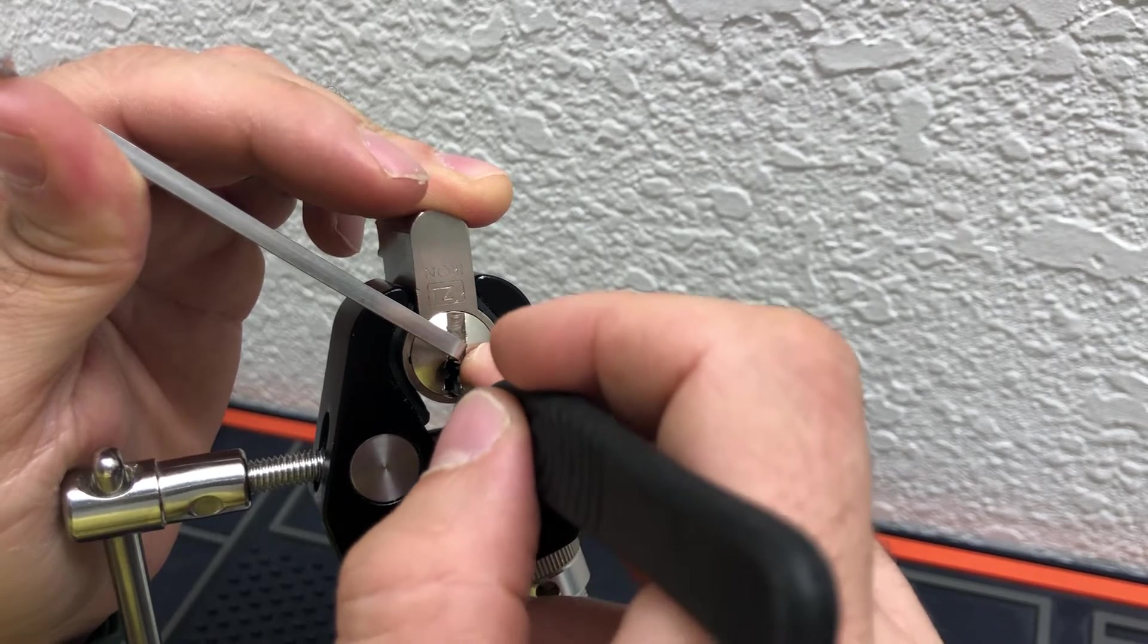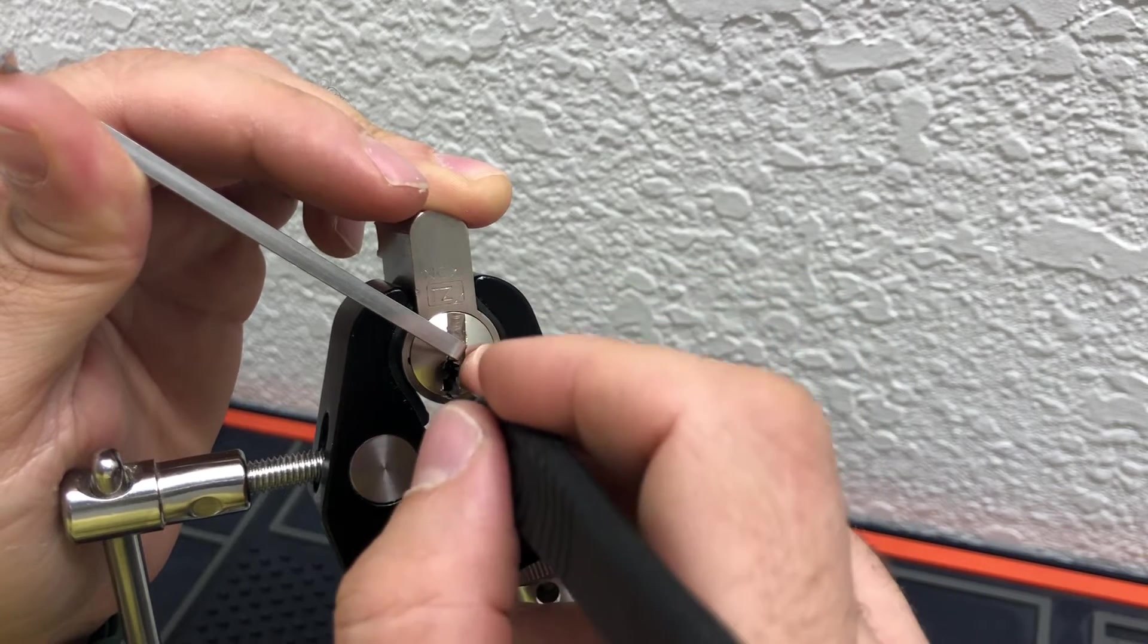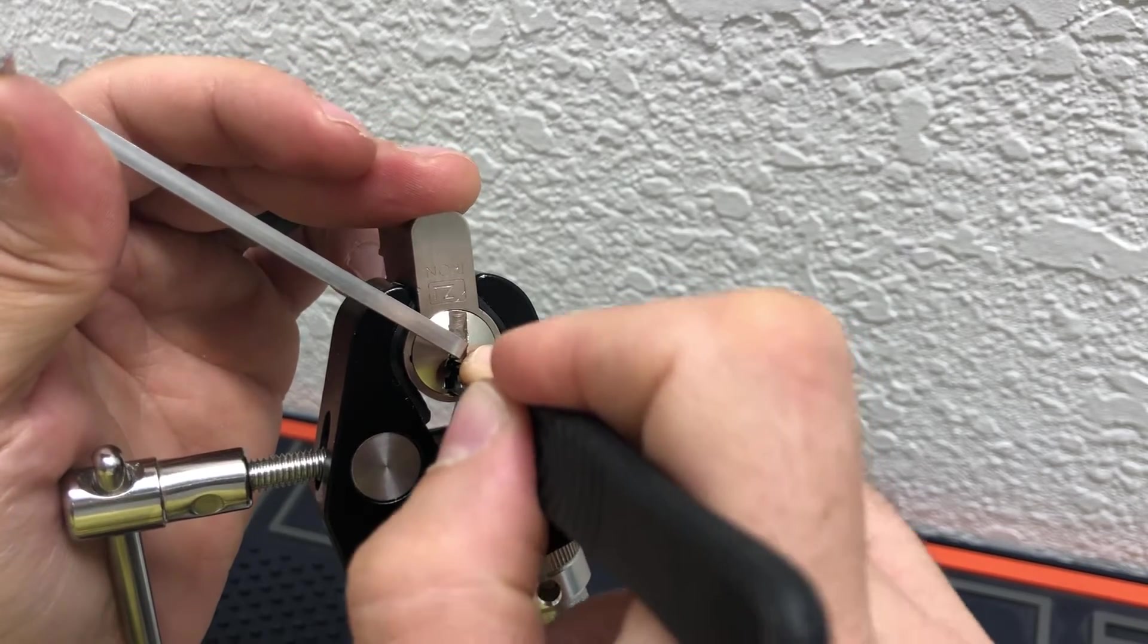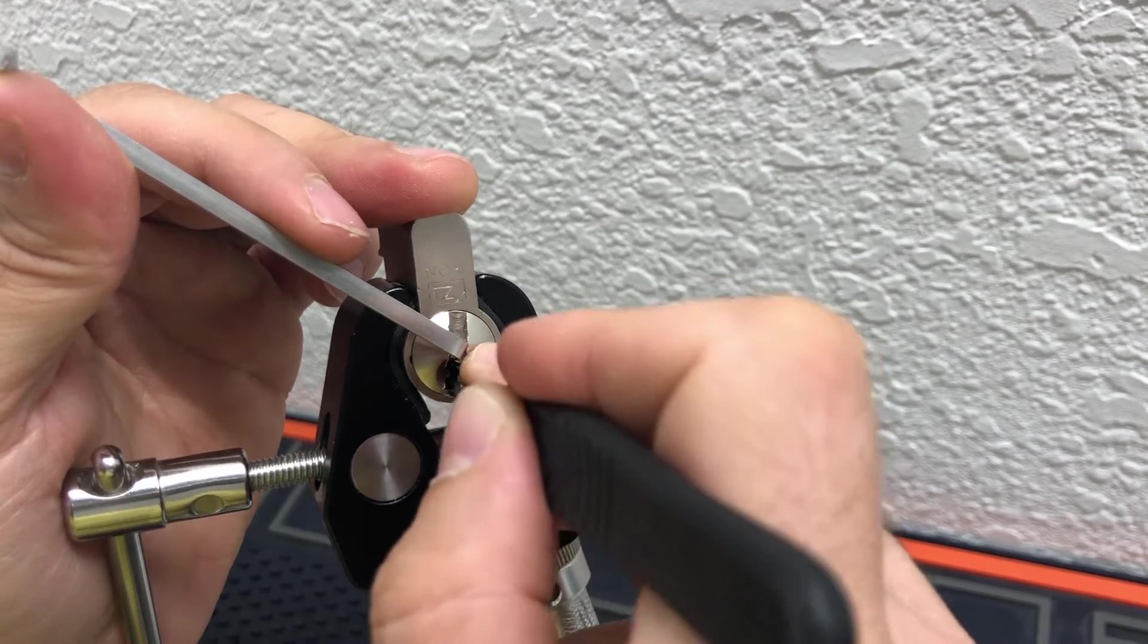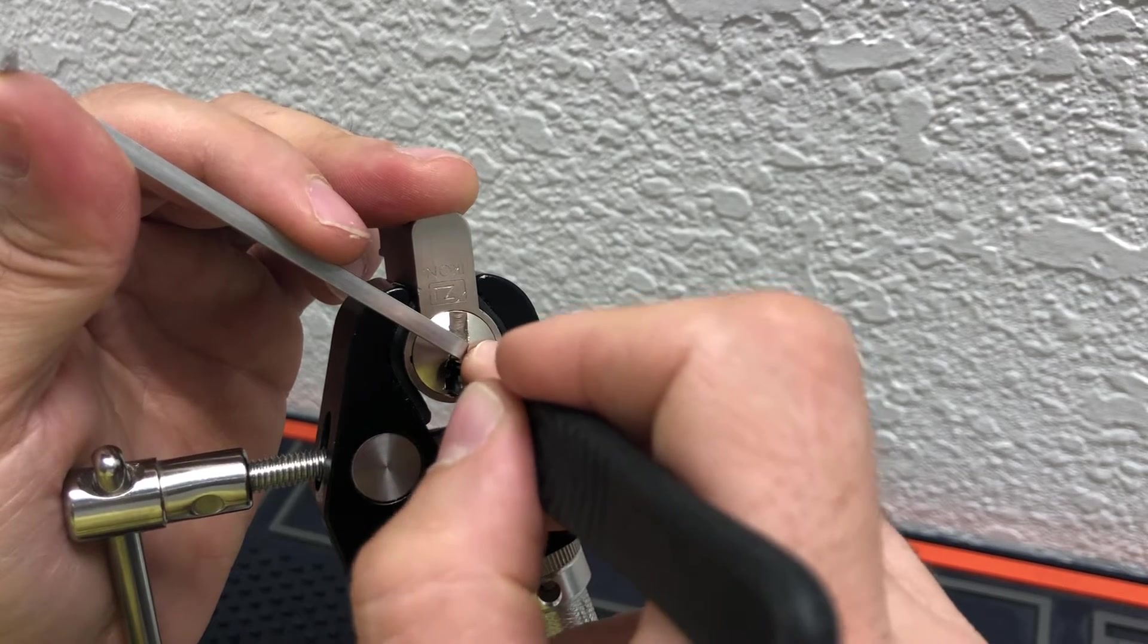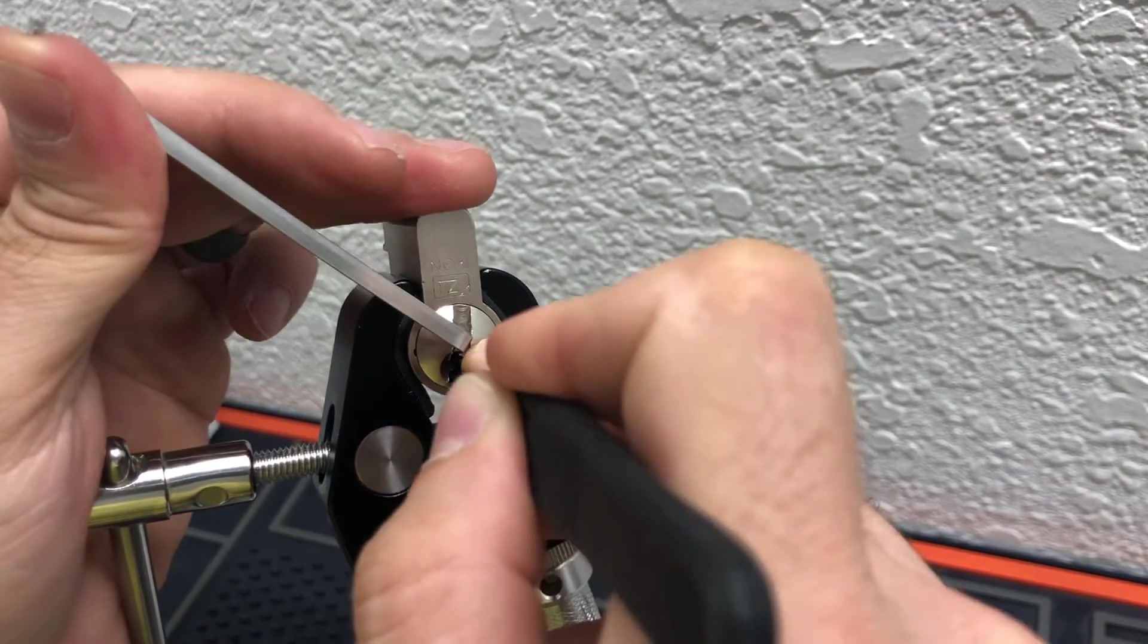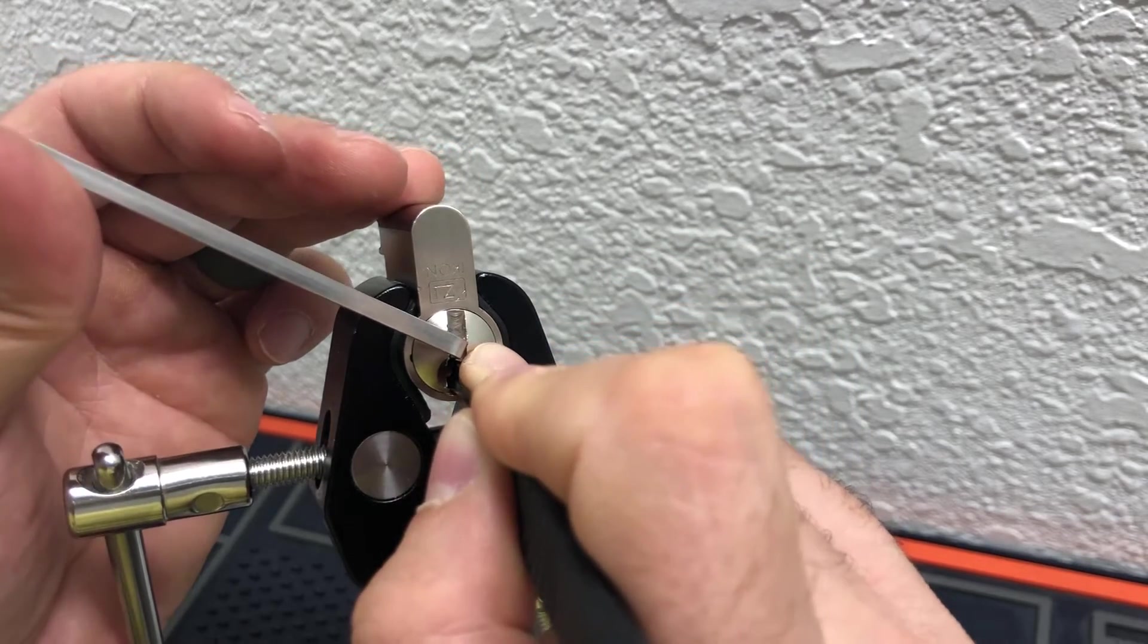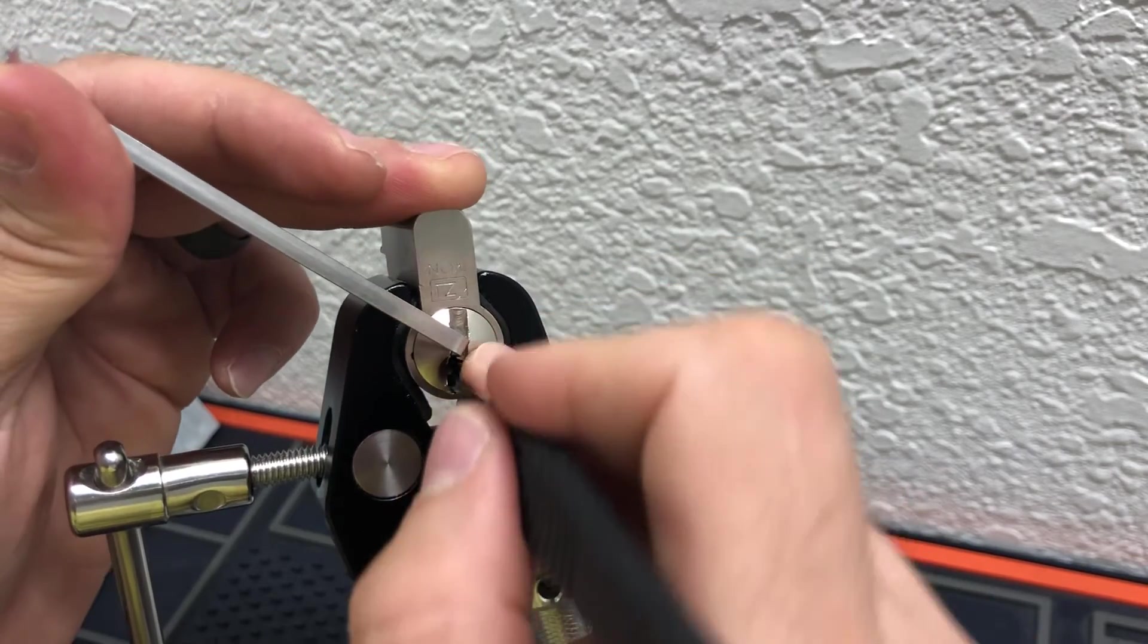So, I'm going to tap number 3. Puts me into a deeper false set there. And I've got to get under number 4 now. Let's see. Okay, 4 set.